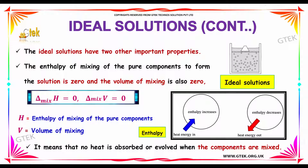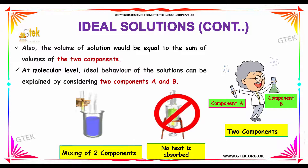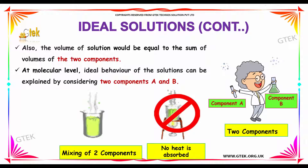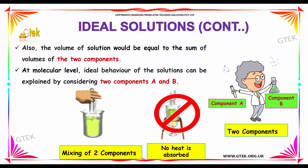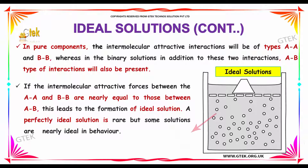The volume of the solution would be equal to the sum of the volumes of the two components. At the molecular level, the ideal behavior of the solution can be explained by considering two components A and B, where the mixing of the two components occurs with no heat absorbed.